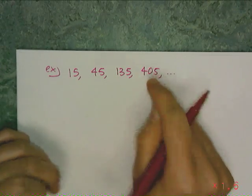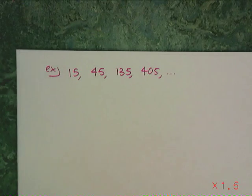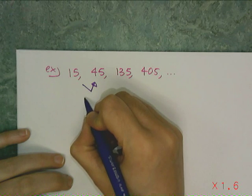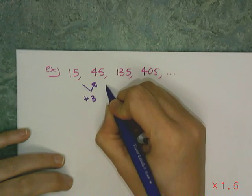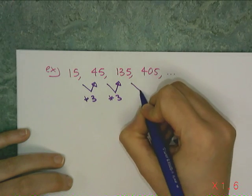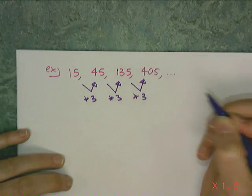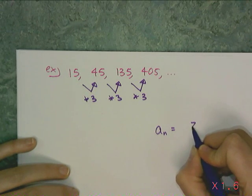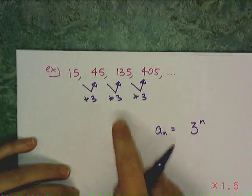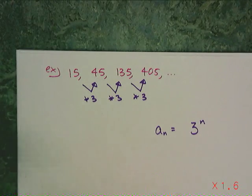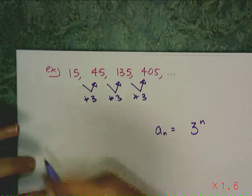Now these numbers are growing pretty fast, so that's a good clue that it's going to be geometric. And so I can verify by trying to find a common ratio. And 15 times 3 gives me 45. 45 times 3 gives me 135. 135 times 3 gives me 405. So that's a clue to me that the apparent formula is going to have a 3 to the nth power. Because the common ratio gets raised to an exponent in the apparent formula for a geometric sequence.